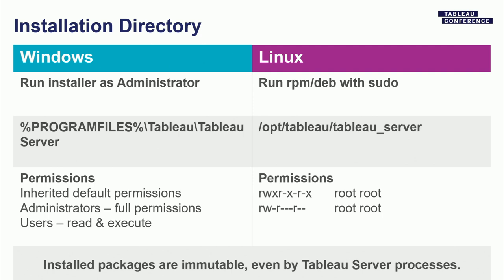As far as permissions go, on Windows we inherit the default permissions of those directories — administrators have full permissions, and all users have read and execute permissions. On Linux, everything is restricted to root, and nobody else will have permissions to those installation directories. Once packages are on disk, everything is immutable — even running services cannot modify those packages on disk, ensuring package integrity so we can be sure what's running on the server is what we intended.